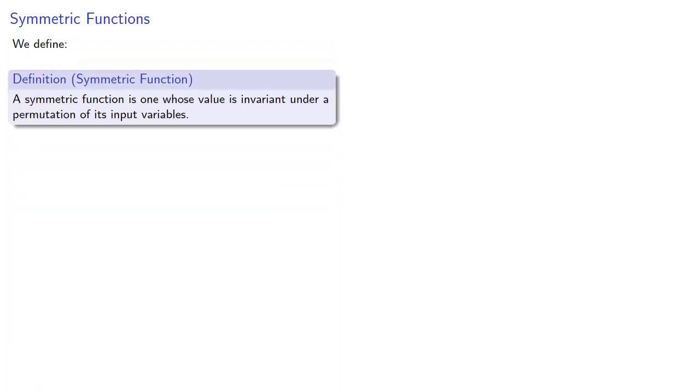We define a symmetric function to be one whose value is invariant under a permutation of its input variables. Now, if a function isn't symmetric, that means some permutations will yield different values. Let's take a look at that.